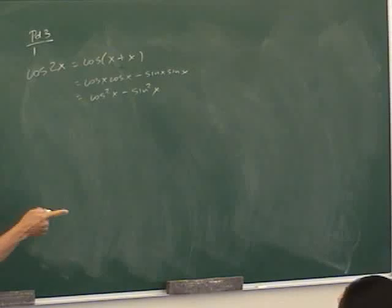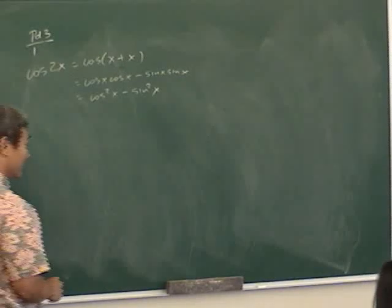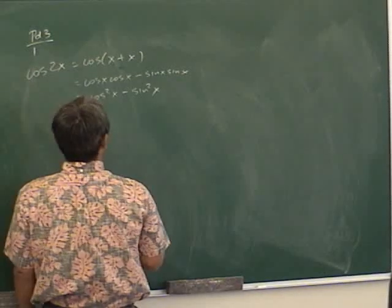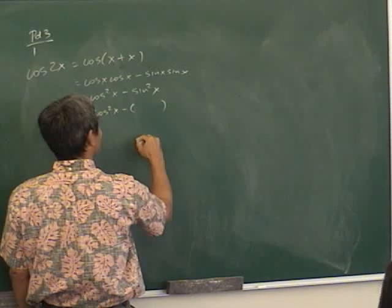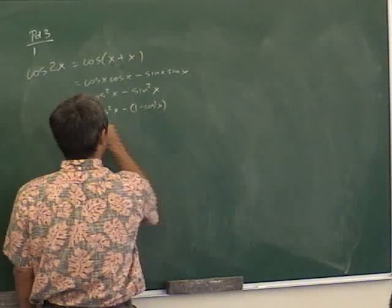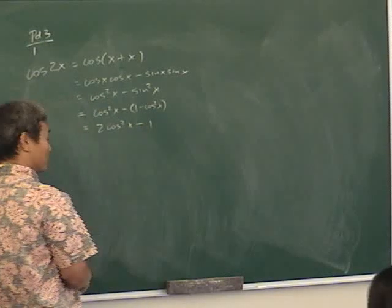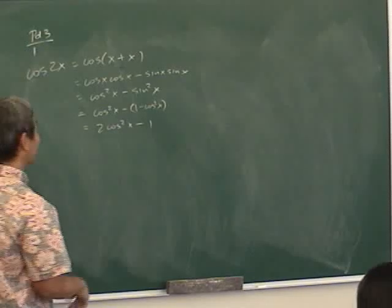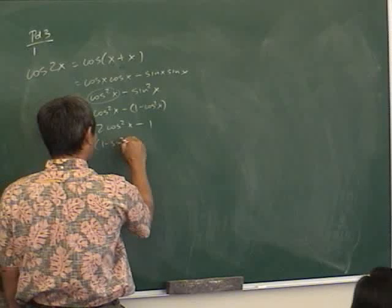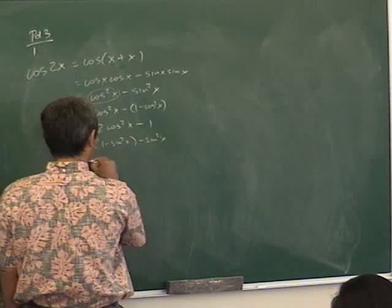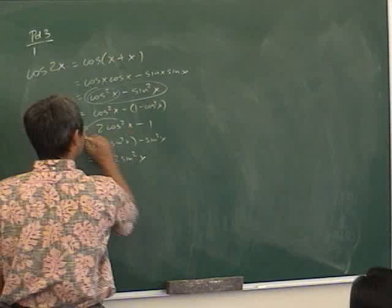There are three identities for cosine(2x) on the identity sheet. The second: replace sine²x with 1 − cosine²x to get 2cosine²x − 1. The third: replace cosine²x with 1 − sine²x to get 1 − 2sine²x. So you have: (1) cosine²x − sine²x, (2) 2cosine²x − 1, (3) 1 − 2sine²x.